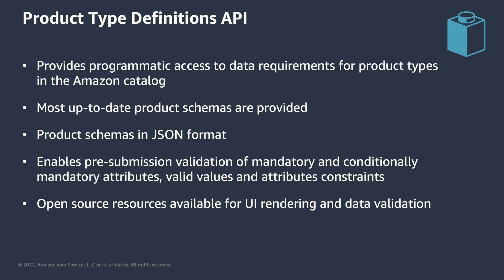The Product Type Definitions API provides programmatic access to data requirements for the product types in the Amazon catalog. It is the way you can retrieve the attributes and constraints that give shape to products belonging to a specific category. With this API, you will always get the most up-to-date schemas. This means that, for example, when a product type is updated with new attributes, the API will return this information. The schemas provided are in JSON format, which facilitates processing.